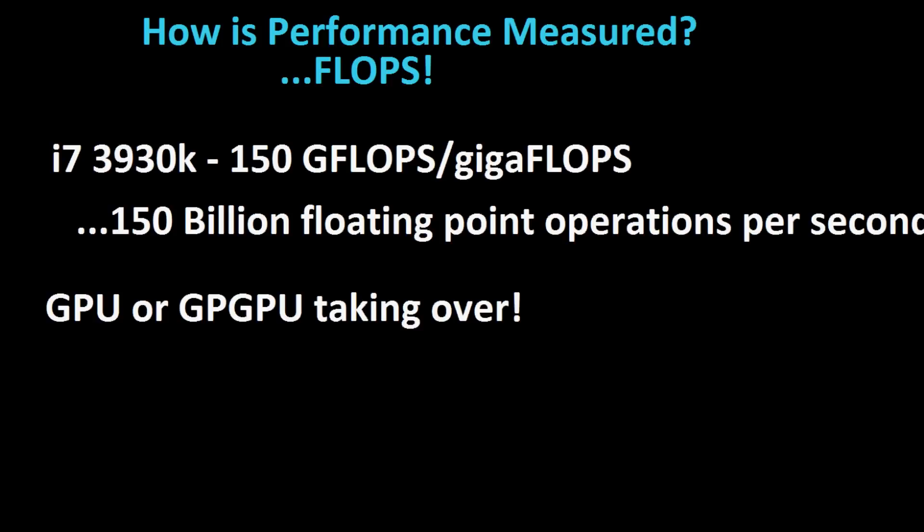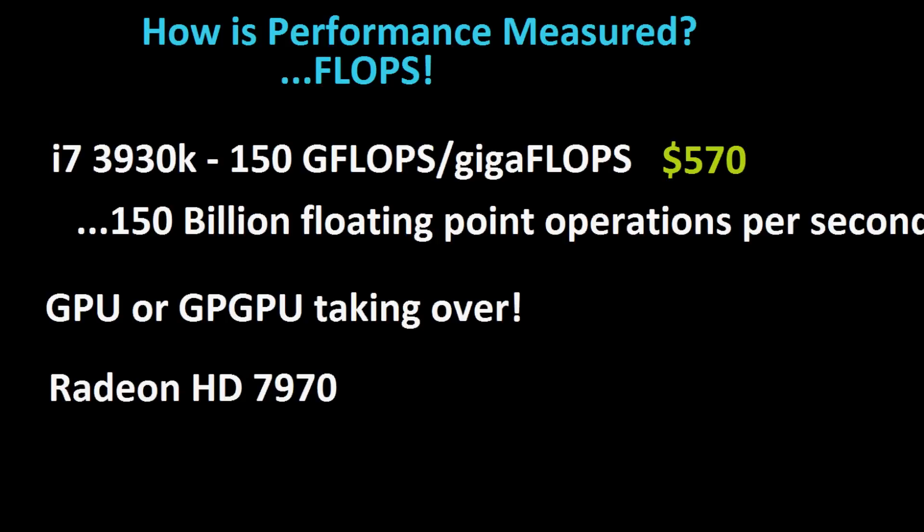The i7-3930K, with six cores, runs $570 new and gives a peak of 150 GFLOPs. Compare that to a GPU — the Radeon HD 7970 costs about $550 and will give you around 3 to 4 TeraFLOPs. Not GigaFLOPs — TeraFLOPs. That's quite the step up, and it's all basically down to architecture.